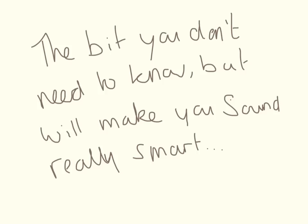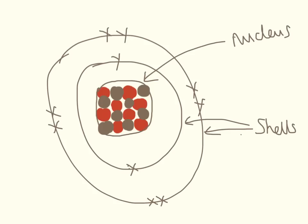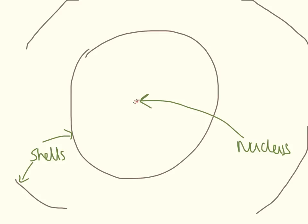The next bit you don't need to know for your GCSE, but it's very interesting and will make you sound smart. In your GCSE and A-level, you'll see atoms drawn with a large nucleus and shells closely around it — but this isn't actually what they look like. In reality, the nucleus is tiny, and the shells take up the massive amount of space around the outside. We draw it the other way because the nucleus has all the mass and the electrons have virtually none.